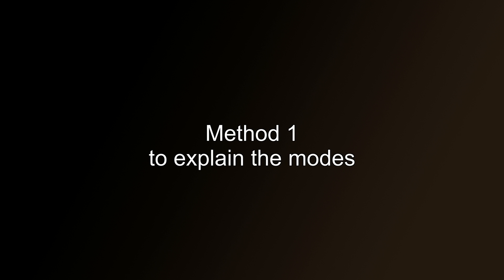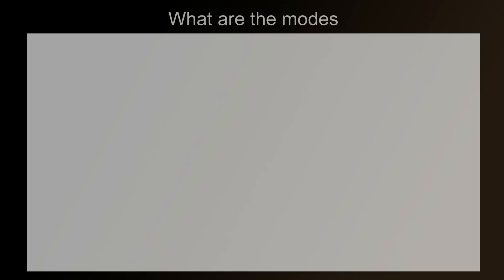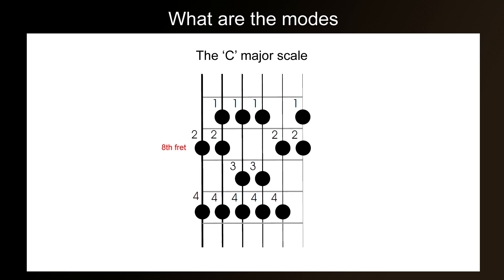Method 1 for explaining the modes. For this method, we'll use the 2-octave major scale. Now, if we play the first octave — that is, from C to C — this is the Ionian mode.